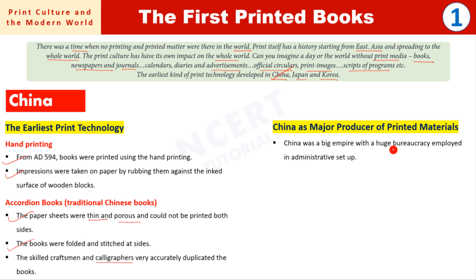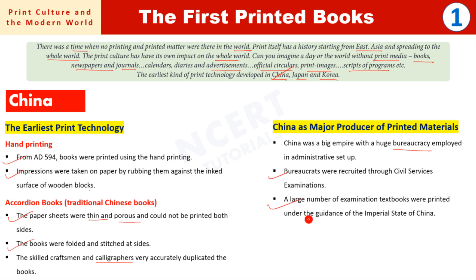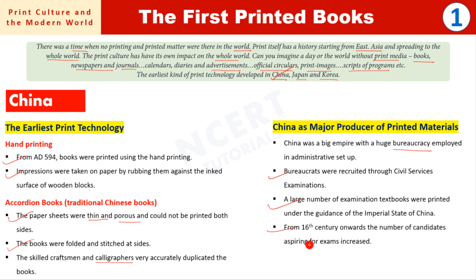China had a big bureaucracy, and bureaucrats were recruited through civil services examinations — similar to how civil services examinations are held for administration in India today. A large number of examination papers were printed under the guidance of the imperial state of China. The preparation materials for these examinations were also printed, so that aspirants entering the bureaucracy could access them. From the 16th century onwards, the number of candidates aspiring for exams increased, and so the volume of printed materials also increased.